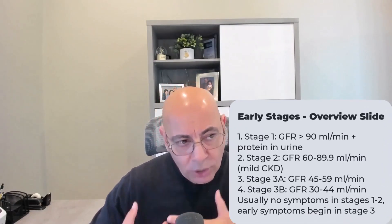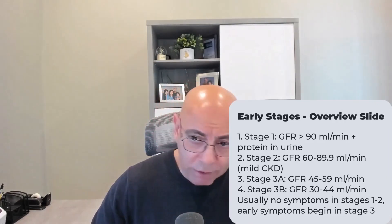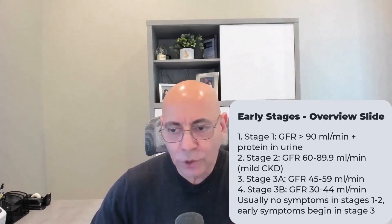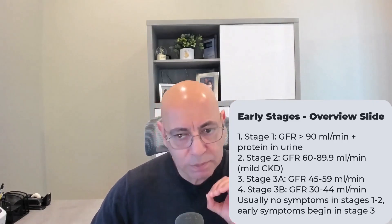Stage two is still an early stage, considered mild chronic kidney disease. GFR is about 60 to 89 mils per minute. You're really not going to have any symptoms in either stage one or stage two. You may have protein in the urine — we are looking for signs of kidney damage.